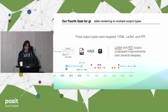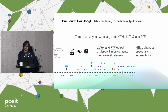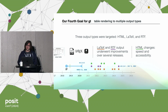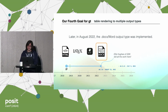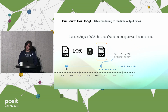Throughout many releases we fixed up and improved LaTeX and RTF. Even the last release had RTF and LaTeX improvements. For HTML we focused on speed of rendering and having accessible tables, which is very important to us. In August 2022, the docx Word output type was implemented. Ellis Hughes from GSK did a huge amount of work to make this really good — I'm forever in debt to him. We're improving that a lot as well.